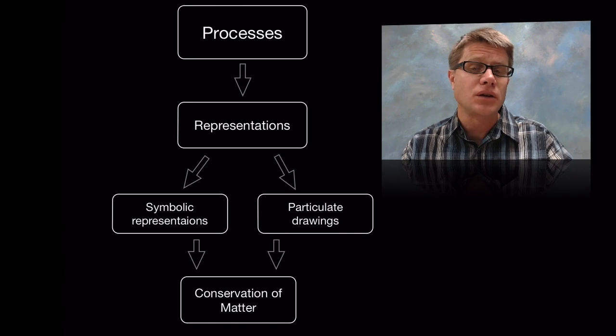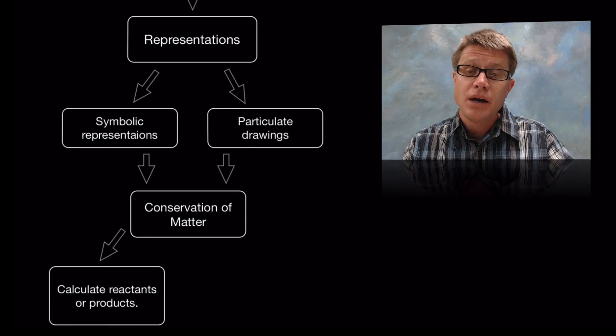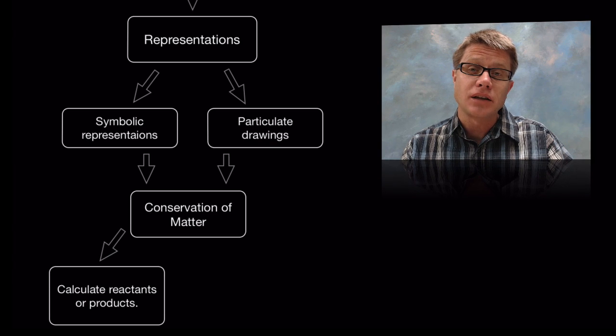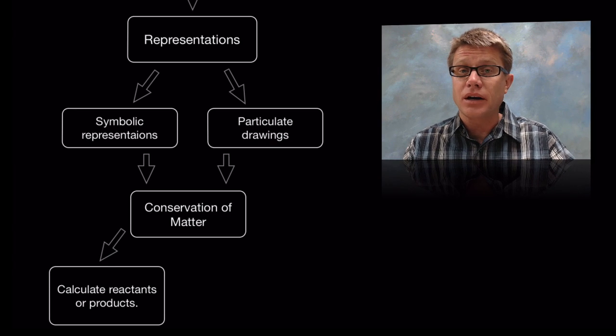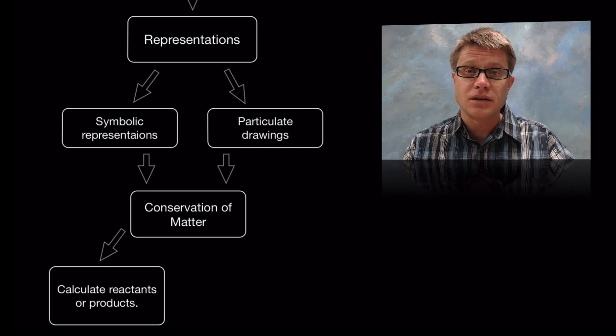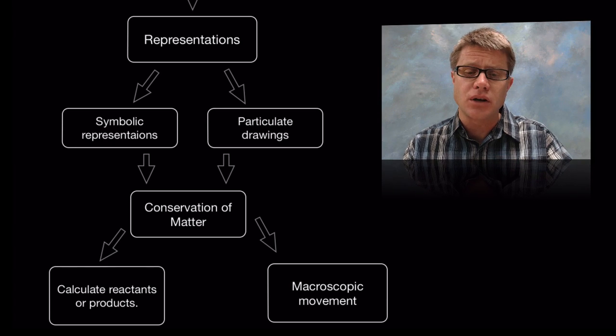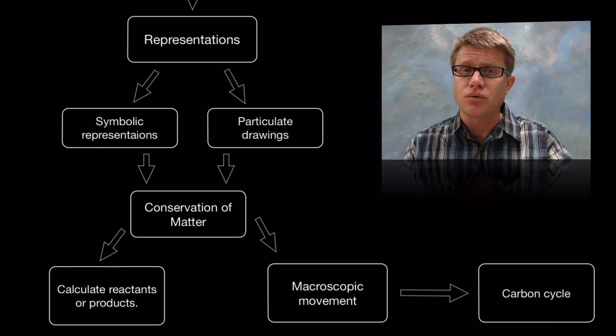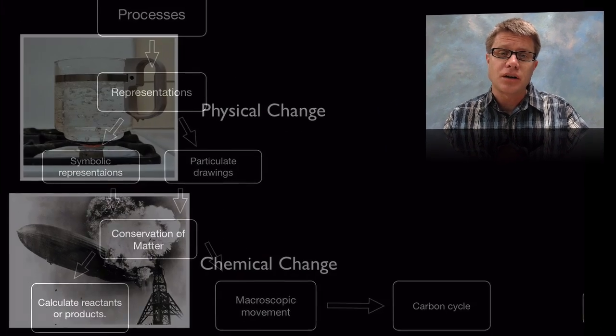Matter can neither be created nor destroyed, and so we can use that to calculate reactants based on products or products based on reactants. And we can also look at macroscopic changes. We can look at movement of particles around. An example of that would be the carbon cycle.